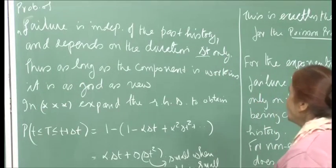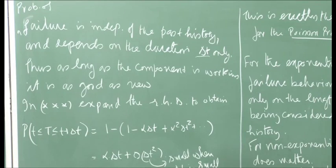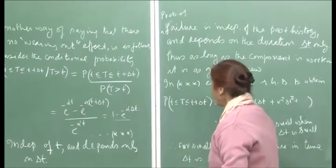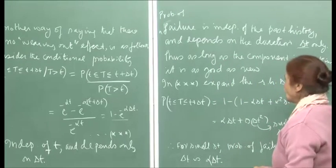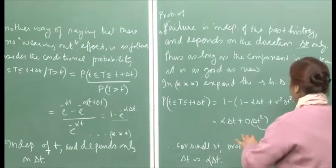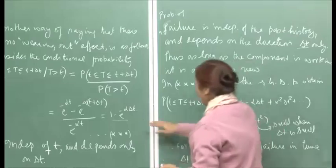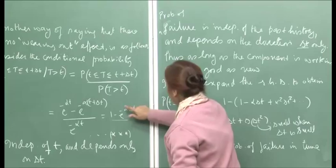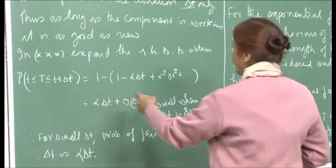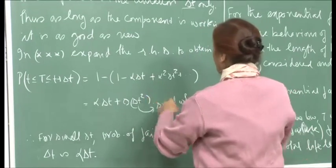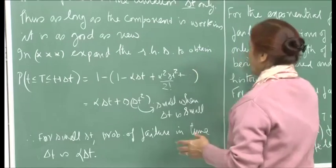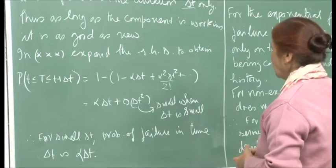As long as the component is working, it is as good as new. In this equation, if I expand the right-hand side — the expansion for e^(−α delta T) — which is 1 minus α delta T plus terms with higher powers of delta T from the Taylor series. When you open up the brackets, the 1 cancels and you have α delta T plus higher power terms containing delta T squared, delta T cubed, and so on.